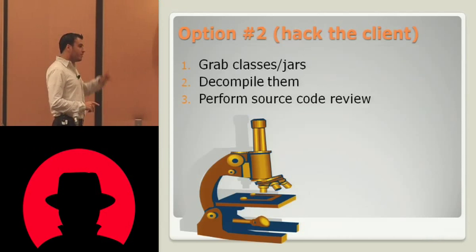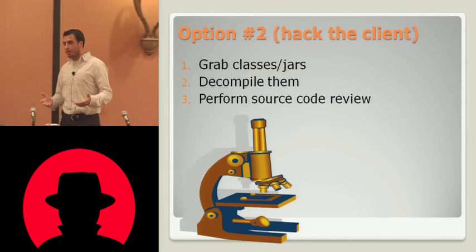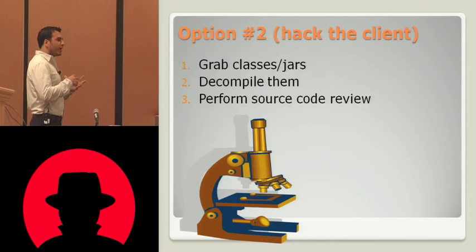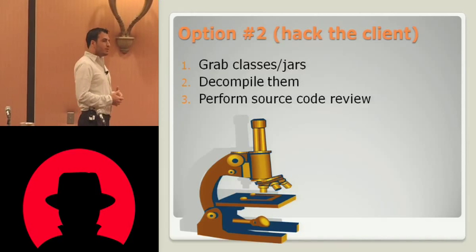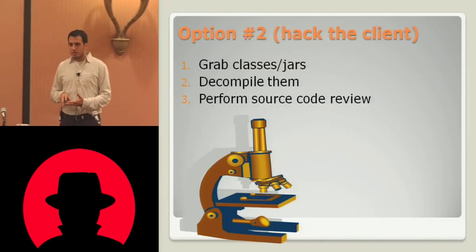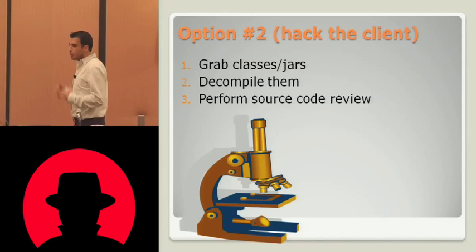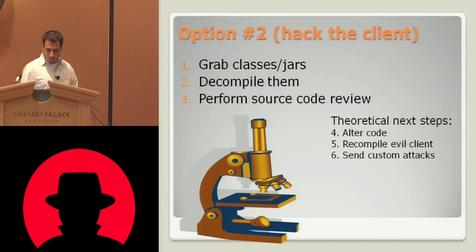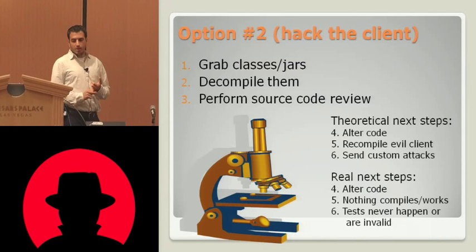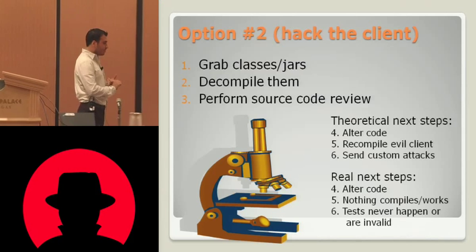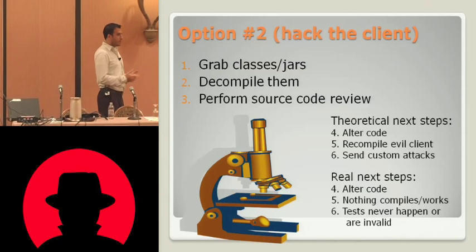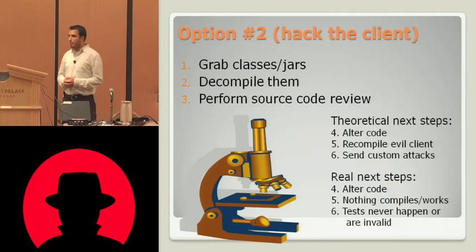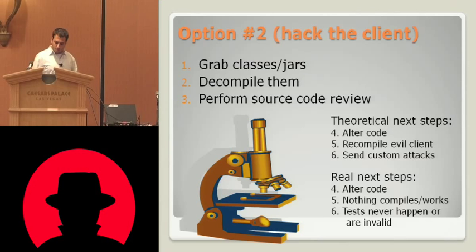So this is the second option — I think Steven DeRise just talked about this in the other talk. There's this idea that you can grab the classes, grab the code base of the applet or desktop application, decompile it, then alter it to be malicious, and then recompile it and run it. This is a good idea in theory — these are our theoretical next steps. But what happens in reality is the code doesn't even compile. Your tests are either completely invalid because the integrity of the application is shot since the decompilation process is not deterministic, or they just never happen because it was too complex to actually recompile.